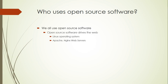Microsoft's IIS web server, which is a commercial web server, comes in at a distant third. Over 80% of web pages that have a server component use PHP as their server-side language, and PHP is an open source project. MySQL, PostgreSQL, and MongoDB are three important database programs used for dynamic web pages, and they're all open source projects.